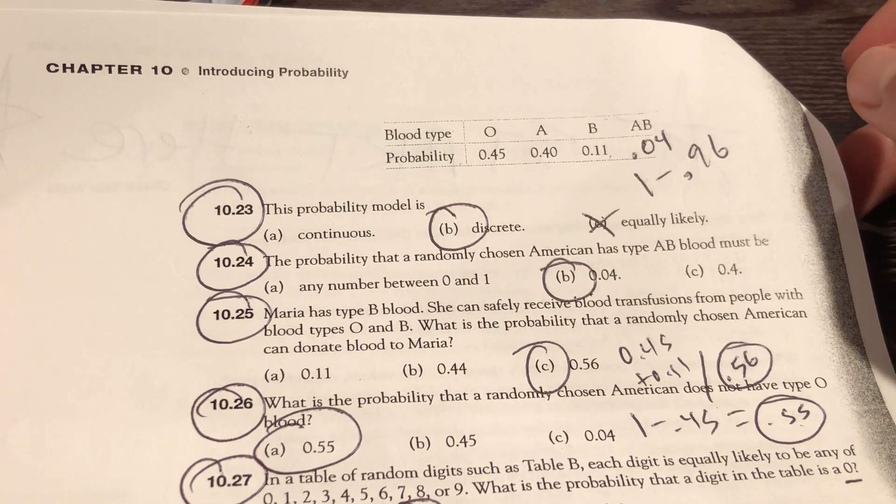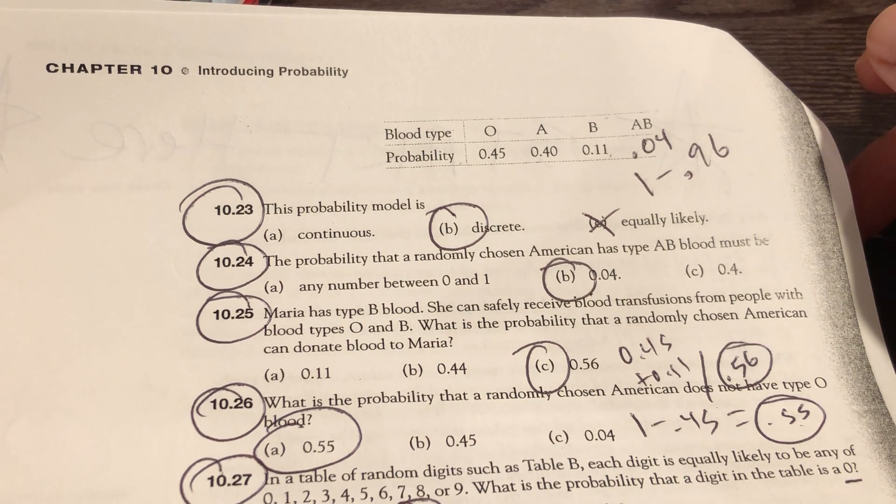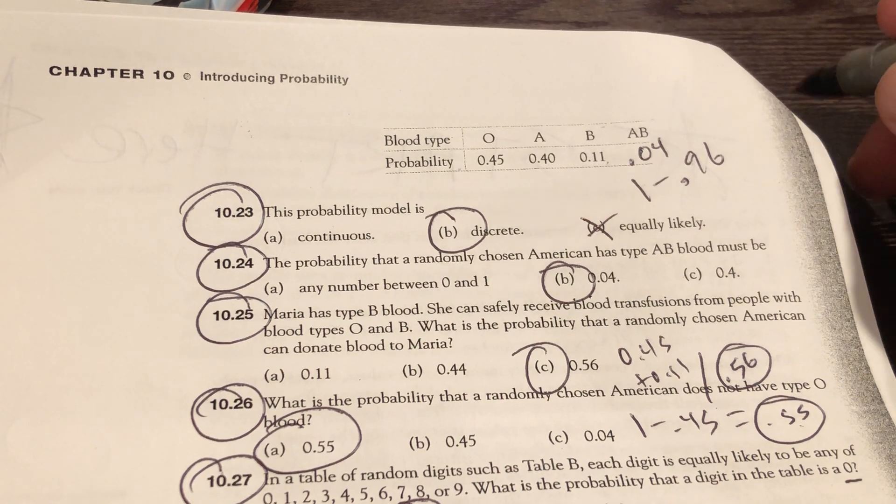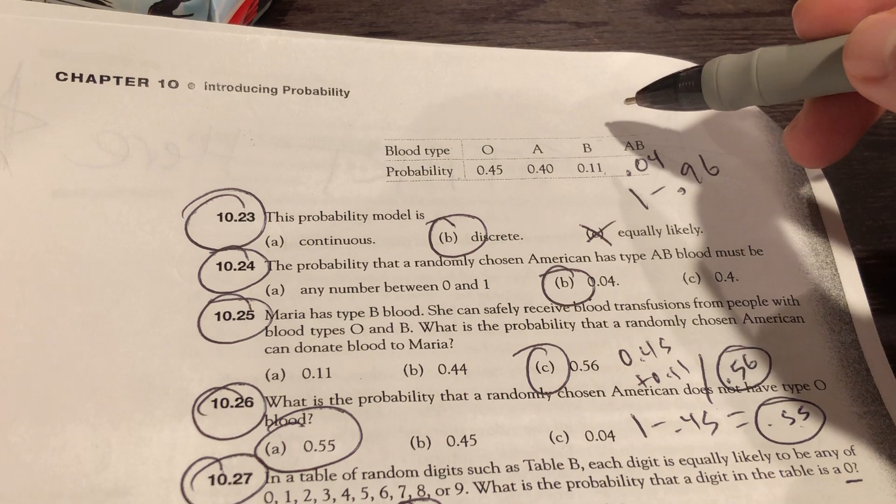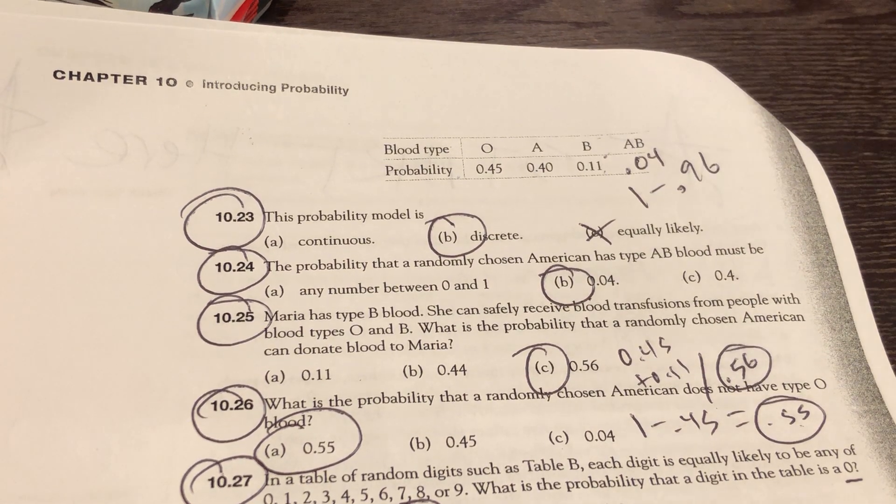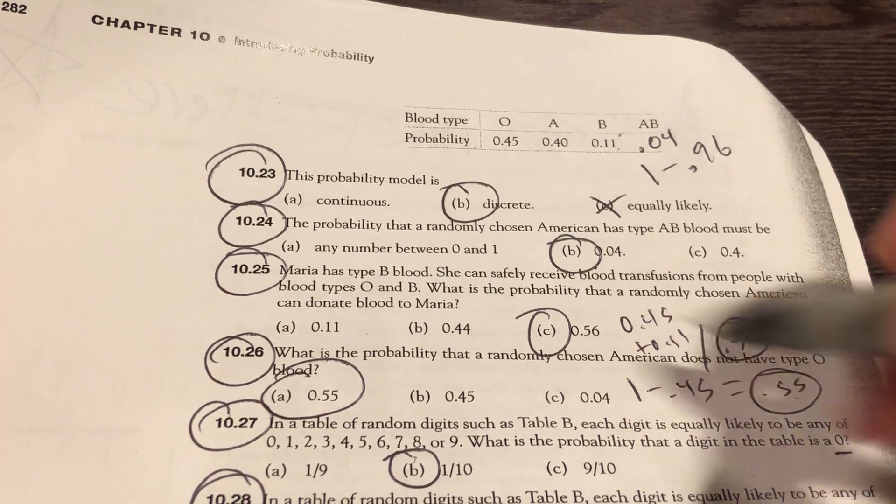Maria has type B blood. She can safely receive blood transfusions from people with O and B. What's probability she can have a blood transfusion from a randomly chosen American? Add up O, add up B. 0.56. What's probability a randomly chosen American does not have O? The complement of O. 1 minus 0.45 is 0.55.